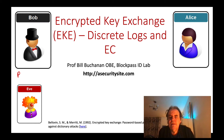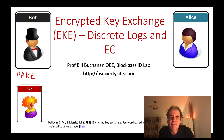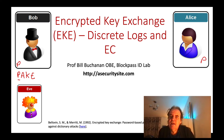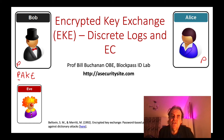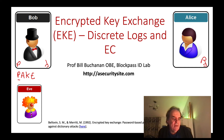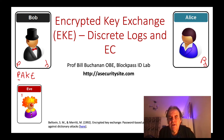Let's look at a method called Password Authenticated Key Exchange or PAKE. Is it possible for Bob and Alice to have a secret, say a password, and then derive an encryption key for a session based on that secret password? And if Eve doesn't know what the password is, it's not possible for her to derive the encryption key being generated.